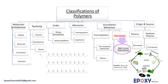Thermosets may have rigid networks — cured epoxy resins, for example — or a flexible network like elastomers or gels. Cured epoxy resins are thermosets with rigid and tough networks. Finally, the source of the polymer is also important. Polymers synthesized by nature are called natural polymers, while others are synthetic, which could be bio-based or fossil-based.